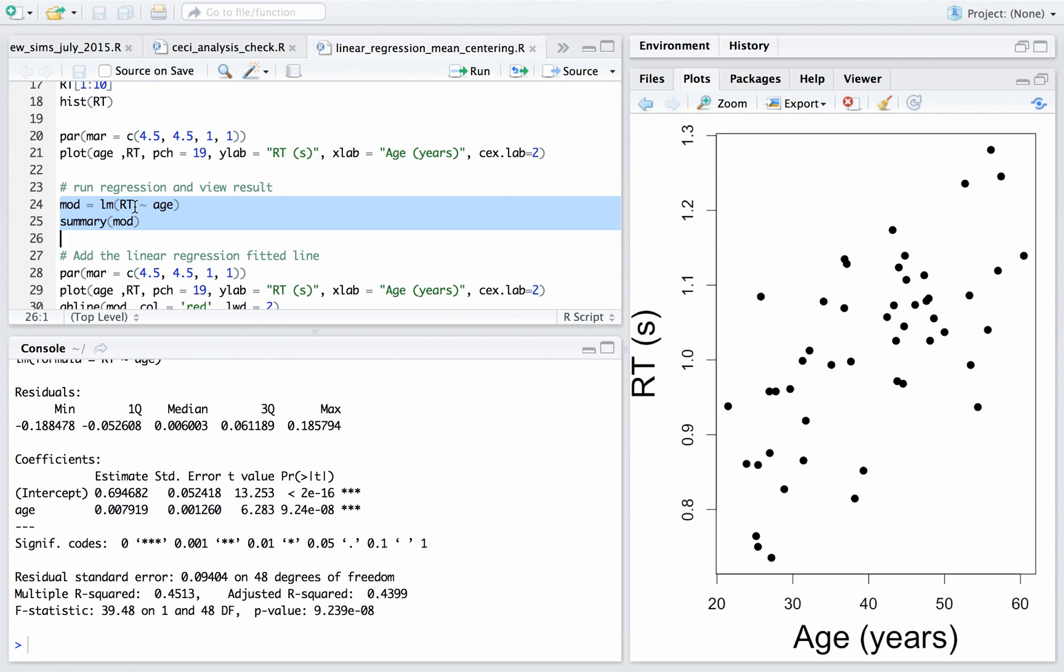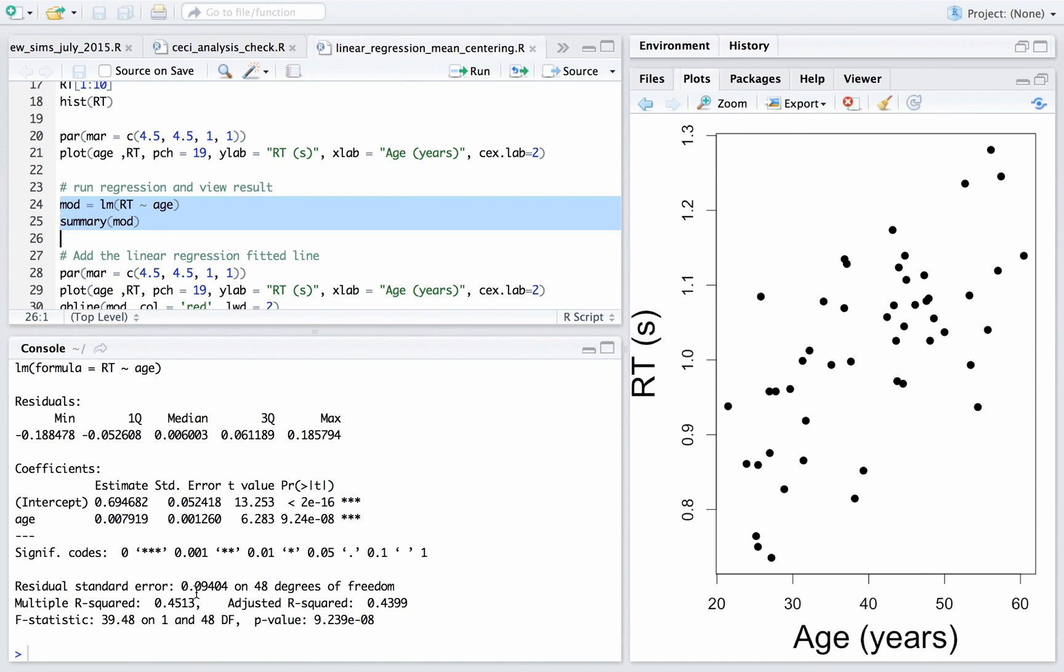So here I'm running the regression. You use the LM command. RT is the dependent variable, age is the independent variable, and R will automatically put an intercept in a model. Most statistics software automatically throws an intercept in the model. And then summary gives you the summary of the model. So this is what we saw before. I had a snapshot of the summary last time, so the intercept is 0.69, so that means the predicted reaction time for a zero-year-old is 0.69, and then for a one-year change in age, there's a 0.0079 increase in reaction time.